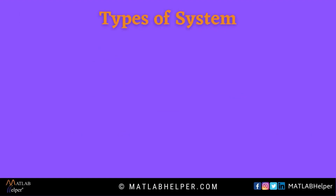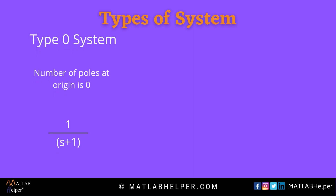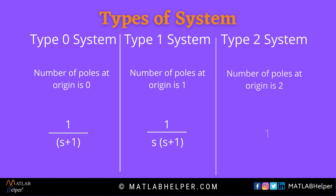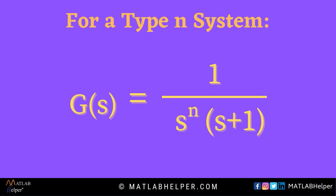Based on the number of poles in an open loop transfer function, here are some types of control systems. Type 0 system: this is the system in which the open loop transfer function has no pole at the origin. In type 1 systems, the transfer function has one pole at the origin. In type 2 systems, the open loop transfer function has two poles at the origin. These are examples of the different types of systems. The type of system is determined by the number of poles it has. If a system has n number of poles, it will be considered a type n system.